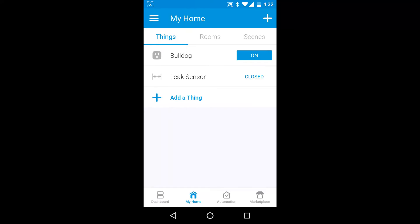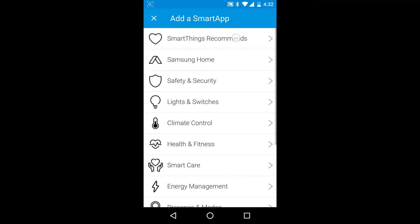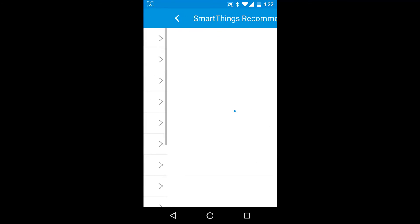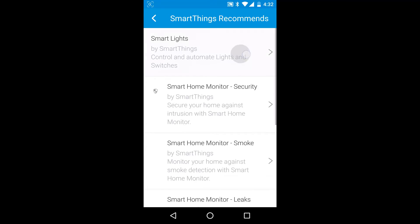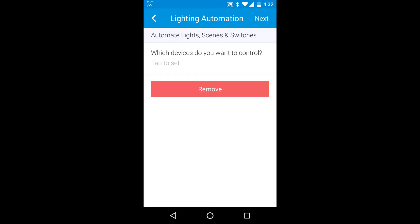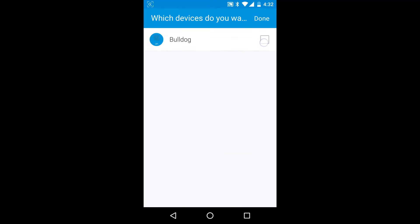Now let's create a SmartThings automation routine to shut off the water valve and send a notification if water is detected by the leak sensor. From the main screen, select the Automation icon at the bottom. At the top of the screen, select Add a Smart App. From the next menu, select SmartThings Recommends and then Smart Lights. Tap which devices you want to control. Then select the Bulldog and tap Done.